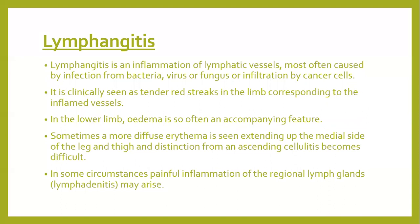The third topic today is lymphangitis. Lymphangitis, as the name signifies, is inflammation of lymphatic vessels, most commonly caused by bacteria, virus, or fungus, or infiltration by cancer cells. It is clinically characterized by tender red streaks in the limb corresponding to the inflamed lymphatic vessels. In lower limb, edema is often an accompanying feature. Sometimes a more diffuse erythema is seen extending up to the medial side of the leg and thigh, and its distinction from ascending cellulitis becomes difficult. Painful inflammation of regional lymph glands — lymphadenitis — may arise as a complication.